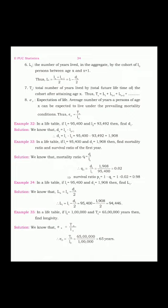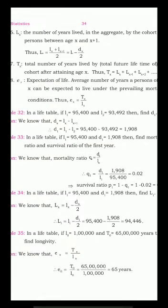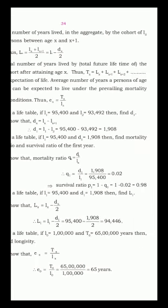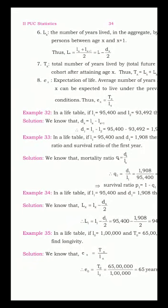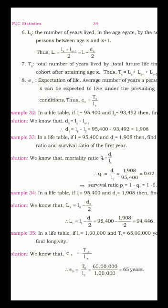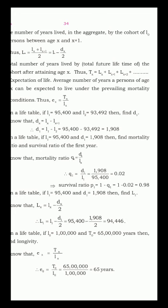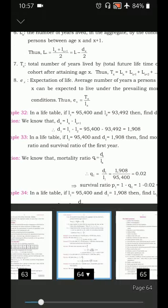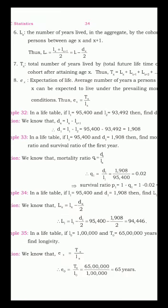Here is a simple example on life table. In a life table, if L1 = 95,400 and L2 = 93,492, then find D1. Using the general formula dx = lx − lx+1, substituting x = 1 gives D1 = L1 − L2 = 95,400 − 93,492. These are very simple examples requiring little attention, and the same kind of examples follow. A little attention is all that is needed.